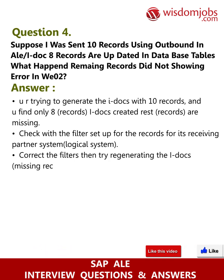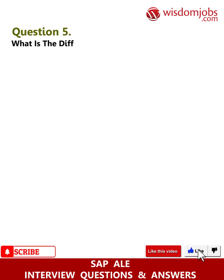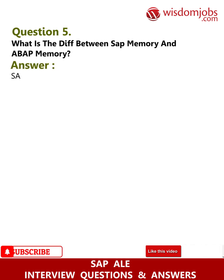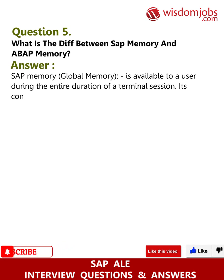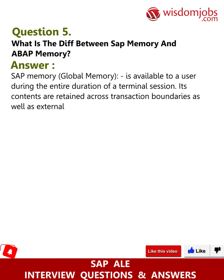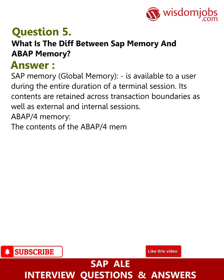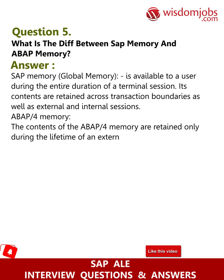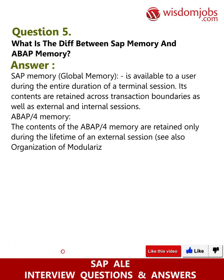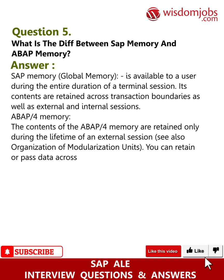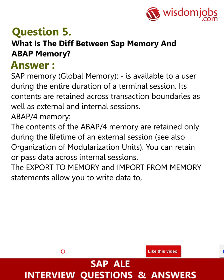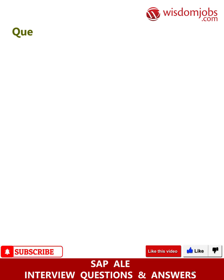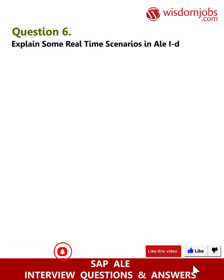Question 5: What is the difference between SAP memory and ABAP memory? SAP memory is global memory available to a user during the entire duration of a terminal session. Its contents are retained across transaction boundaries as well as external and internal sessions. ABAP memory contents are retained only during the lifetime of an external session. The EXPORT TO MEMORY and IMPORT FROM MEMORY statements allow you to write or read data from ABAP memory.